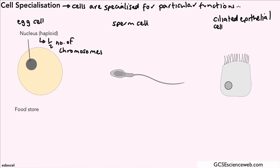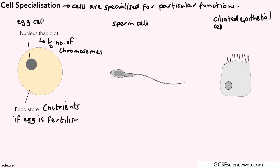Or you could say they contain half the amount of DNA compared to normal body cells. They also contain a food store — normally we would label this part in the middle there cytoplasm, and it is the cytoplasm of the egg cell, but it is particularly rich in nutrients, because if the egg is fertilized it has the nutrients it needs to begin to grow. So this is our egg cell.